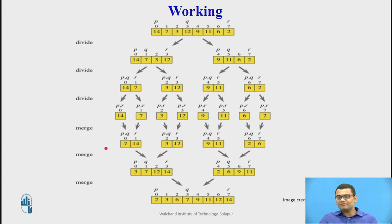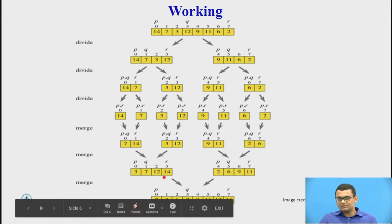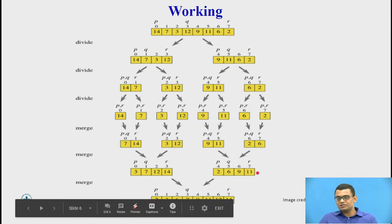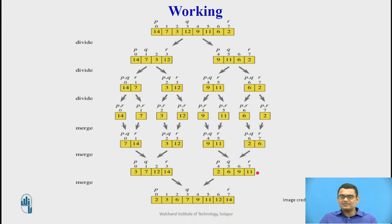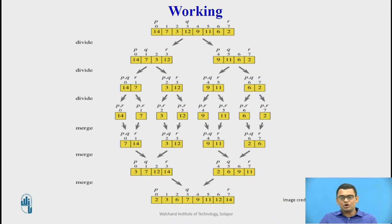Finally we have two sub-arrays which are sorted. If you see, 3, 7, 12, 14 is a sub-array of the original array but these four elements are in sorted order. Similarly, 2, 6, 9, 11 is a sorted sub-array of the original array. And lastly, when we combine these two sub-arrays we come to our solution — a sorted array of size n, that is 8. This is how merge sort works to sort n elements using the divide and conquer approach.